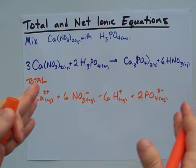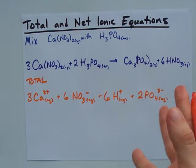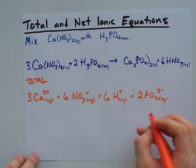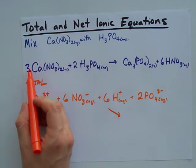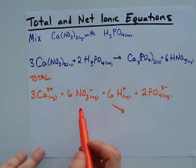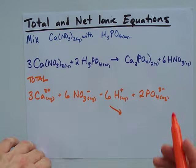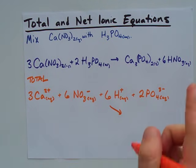If you don't know the charges that come on each of these atoms, you're basically just going to have to memorize them, I'm not going to lie. So, on the left hand side of our equation, I have my 3 calciums, 6 nitrates, 6 hydrogens, 6 H+ I should say, and 2 phosphates. It's all aqueous, true story.